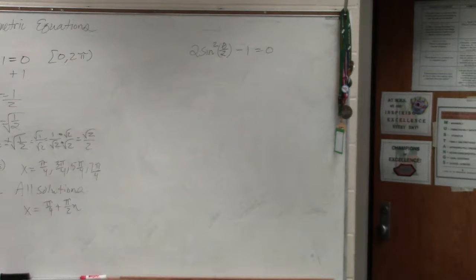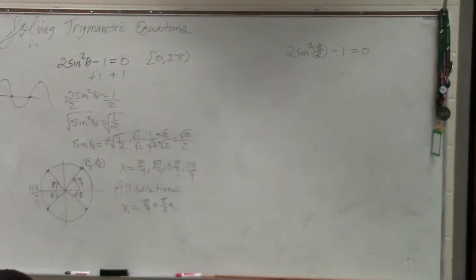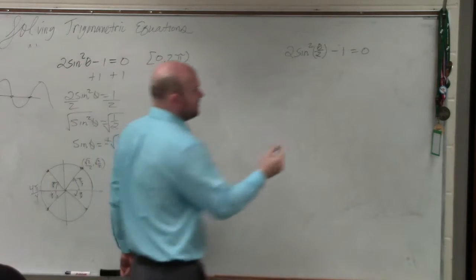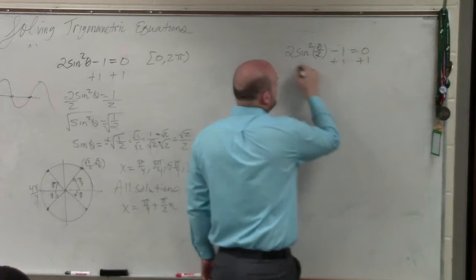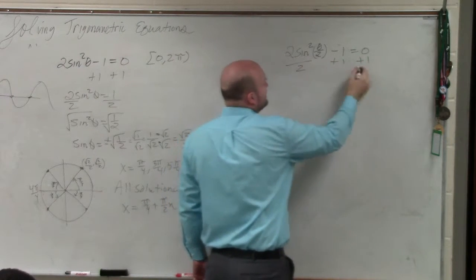But that theta divided by 2 is inside the function. So when it's inside the function, don't worry about it until the very, very end. So we do the exact same thing. We add more to both sides. Then we divide by 2 on both sides.